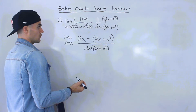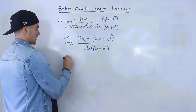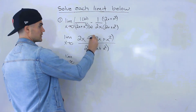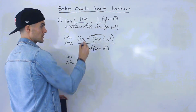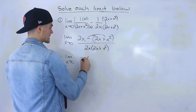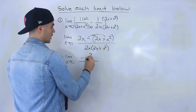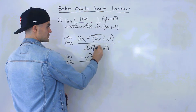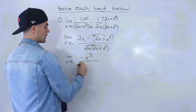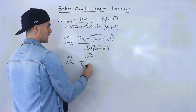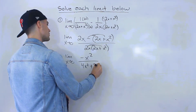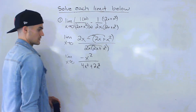Now let's simplify. Taking the limit as x approaches zero, if we distribute the negative inside, 2x minus 2x nets out to zero and we're left with negative x squared up top. In the denominator, distributing 2x through the bracket gives us 4x squared plus 2x cubed.